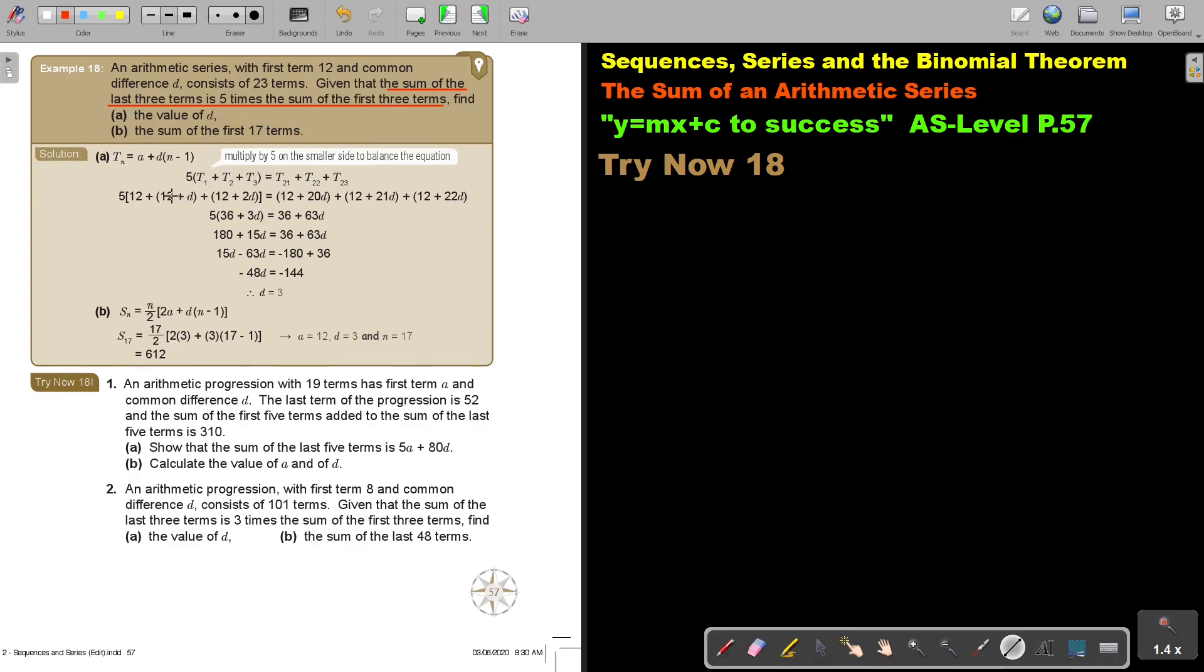And that's what I explained in the white. I know the first term is 12 and then it's 12 plus D, 12 plus 2D. Now if this is 23, so it's N minus 1, so it's 22D. And then this is 21, this is 20 and there's the A.